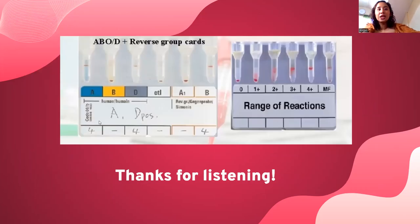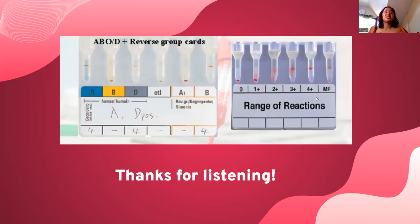For blood bank transfusion reaction investigation using gel cards: if RBCs settle at the bottom, it is negative; at the top, it is positive. For example, A positive means A is positive and D/Rh is positive. This is confirmed with both forward and reverse reactions. Thank you for joining me, guys. Bye-bye.